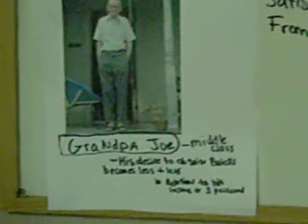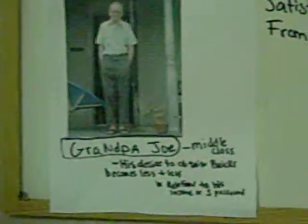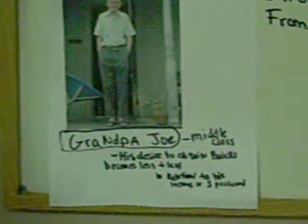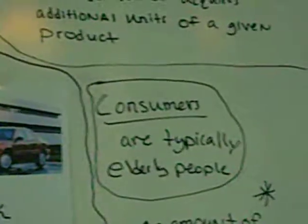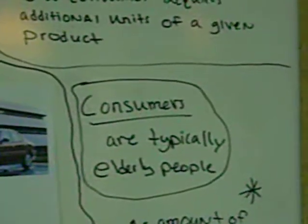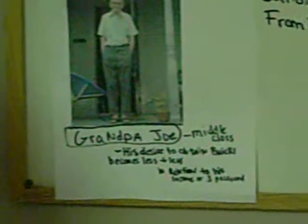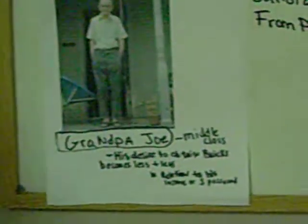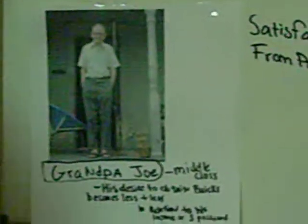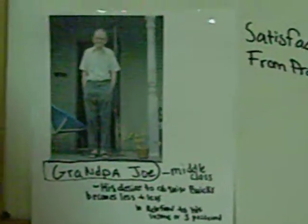Our second consumer is Grandpa Joe. He's middle class and has a desire to obtain Buick cars because they typically fit elderly people with their safety and whatnot. So he has desire to obtain Buick cars, but as he attains them, they become less and less desirable, just because he's in the middle class and doesn't have a lot of money to keep buying Buick cars.